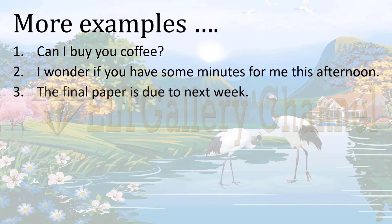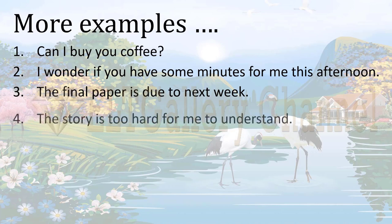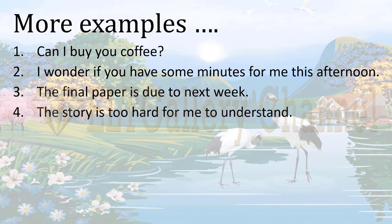'The final paper is due next week' has two meanings. If it is said by a student to another student, this is only information. But if it is said by a teacher, then it demands goods — it demands a paper, meaning the student has to submit their paper next week. Similarly, 'The story is too hard for me to understand' — if said between two students of the same level, it is just telling that the story is hard for the speaker. But if said by a weaker student to a cleverer student, then this is probably demanding goods and service — implicitly asking for an explanation.